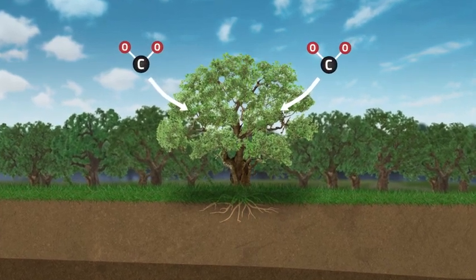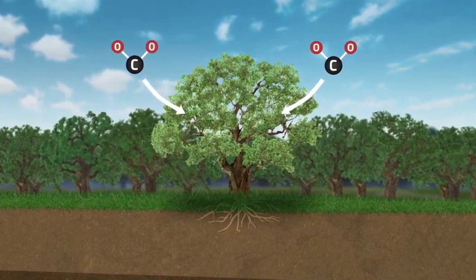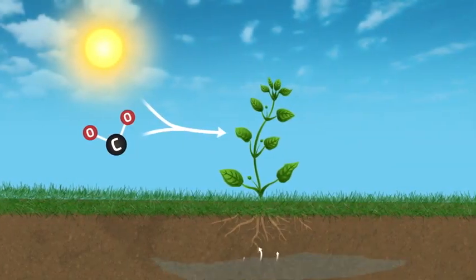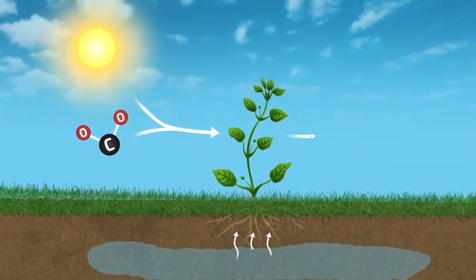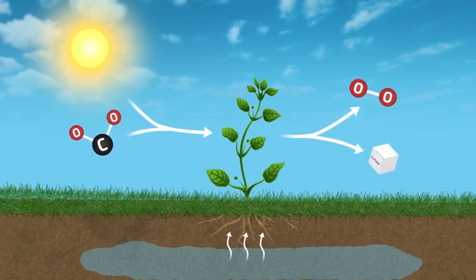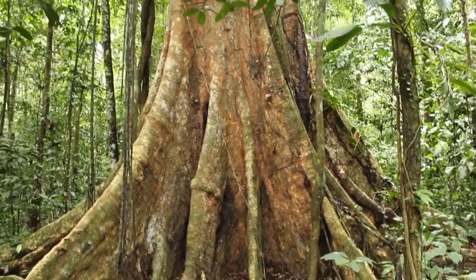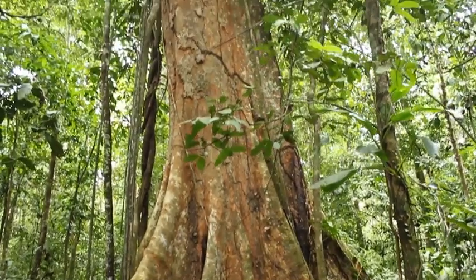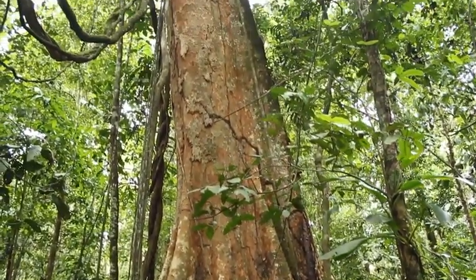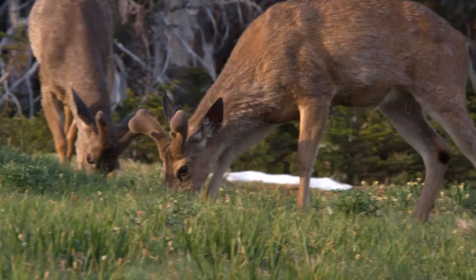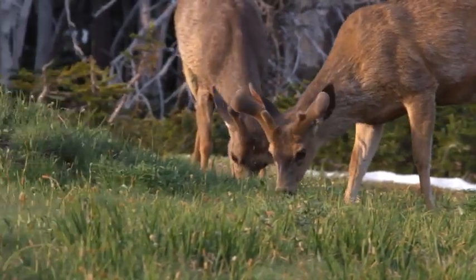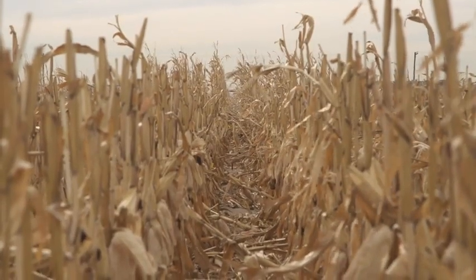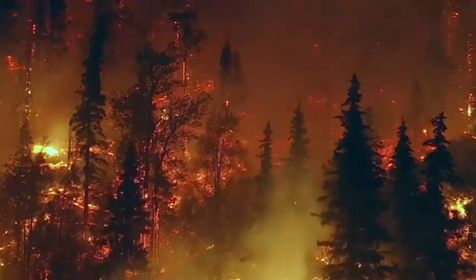Here, plants absorb carbon dioxide from the atmosphere into their cells. With energy from the sun, plants combine carbon dioxide and water to form carbohydrates such as sugar and oxygen through photosynthesis. In this process, carbon dioxide is converted to carbon-based cellular material. Carbon stored in those plants can be transferred when animals eat the plants, the plants die and decay, or in the case of Australia, fire consumes the plants.